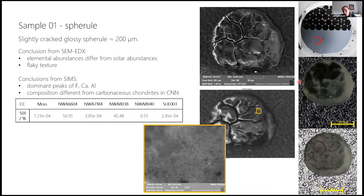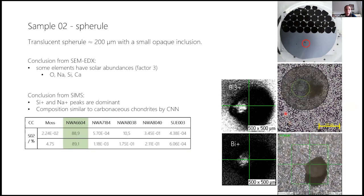And from SIMS analysis and the comparison with our neural network, we saw that there is a very low similarity with the composition of our six carbonaceous chondrites. So although it looks quite a lot like a micrometeorite, we assumed it is not one.